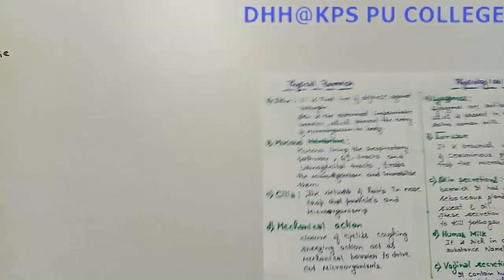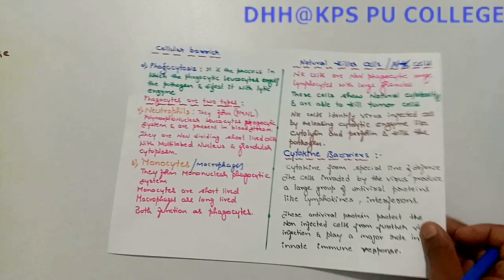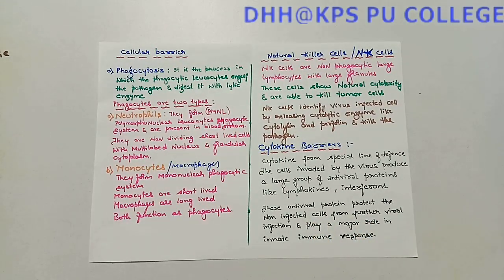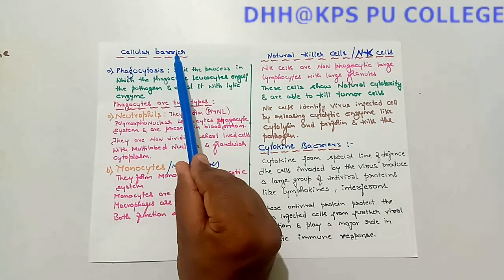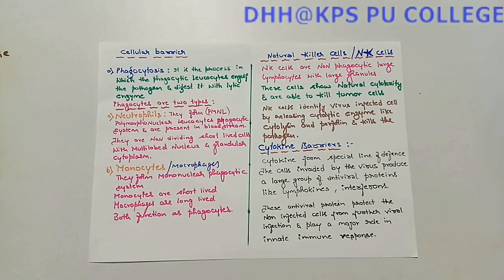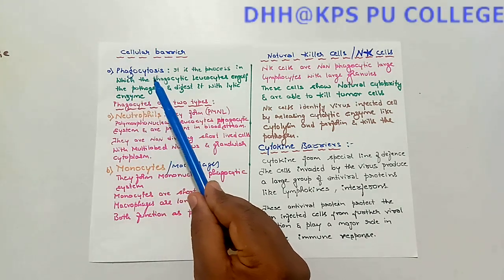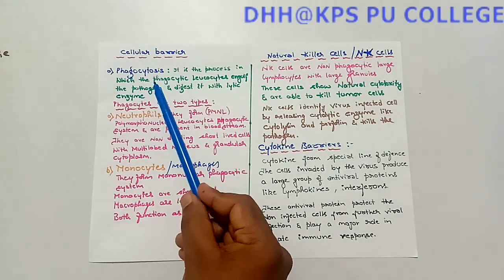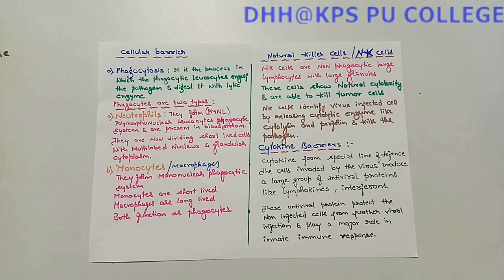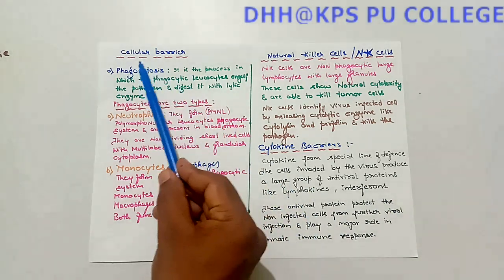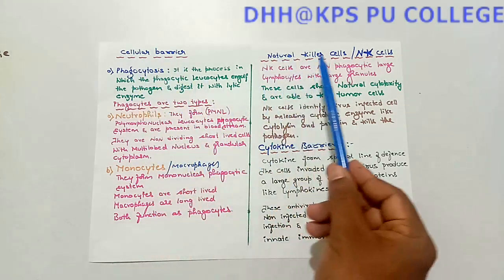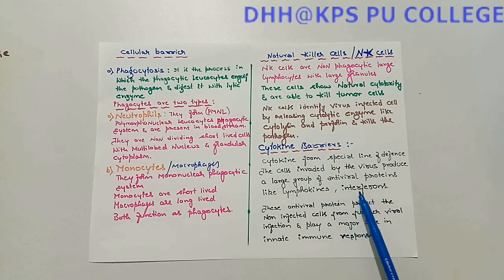Now let us see about the cellular barrier. Cellular barriers form the internal defense system of the body and represent the second line of defense. They include phagocytosis, NK cells or natural killer cells, and also the cytokine barrier, which consists of interferons.